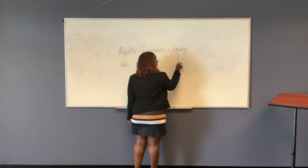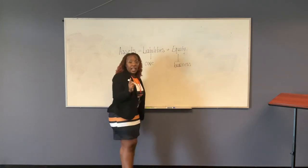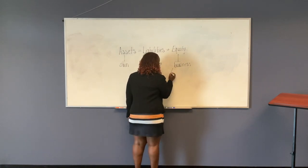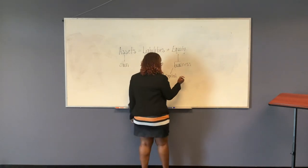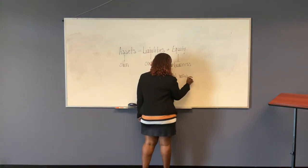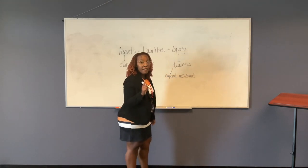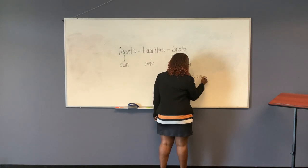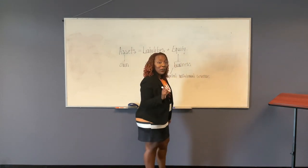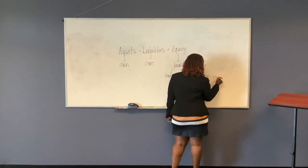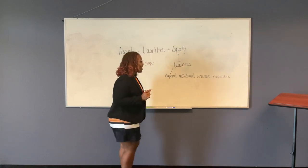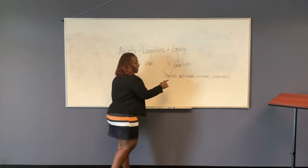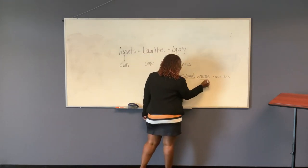And then your equity is your business, your part. Now equity is comprised of four things. Equity is capital. Your part of the business. It is withdrawal. What you take from the business. It is revenue. What you earn from the business. And then it's expenses. What you have to pay for the business. So equity is comprised of these four things. Capital, withdrawal, revenue, and expenses.